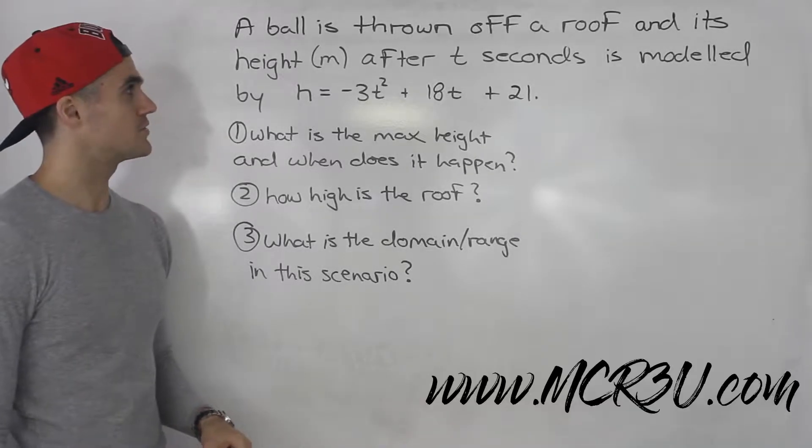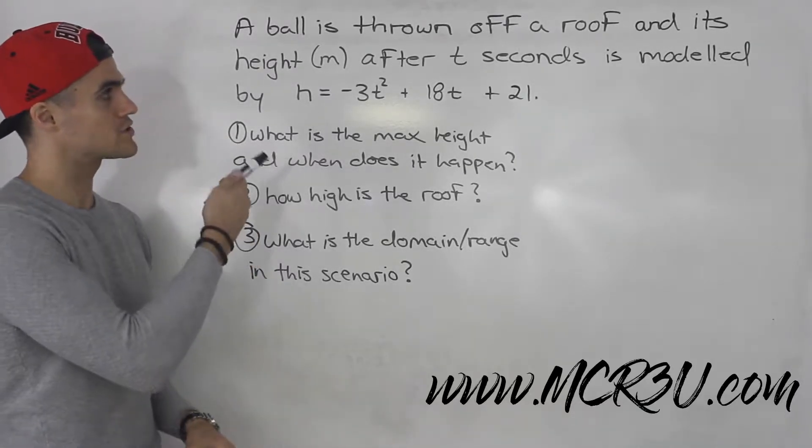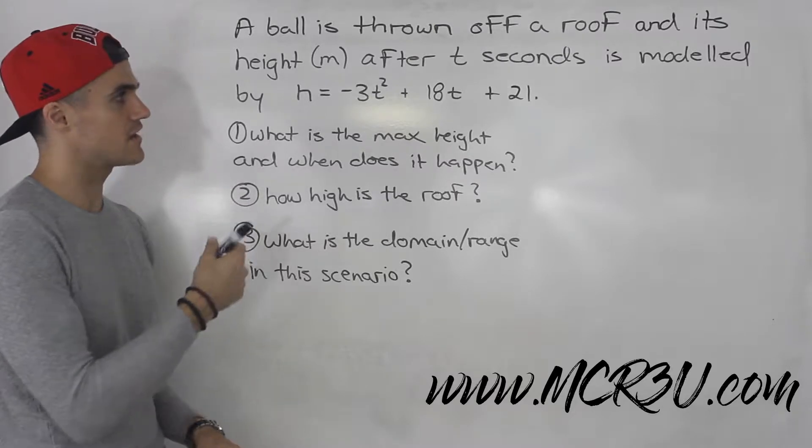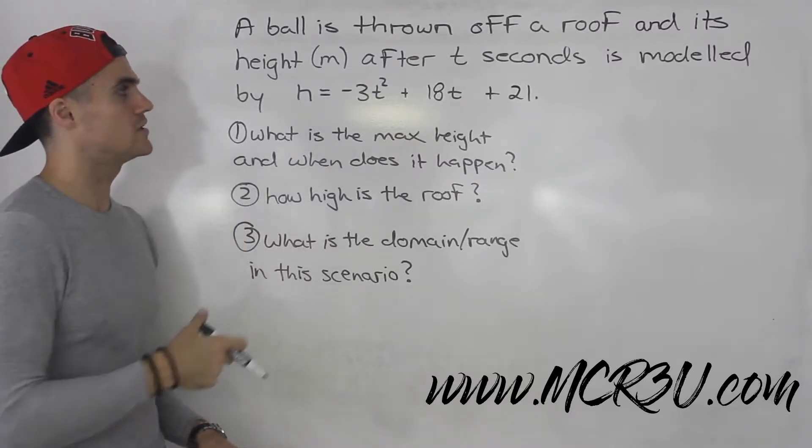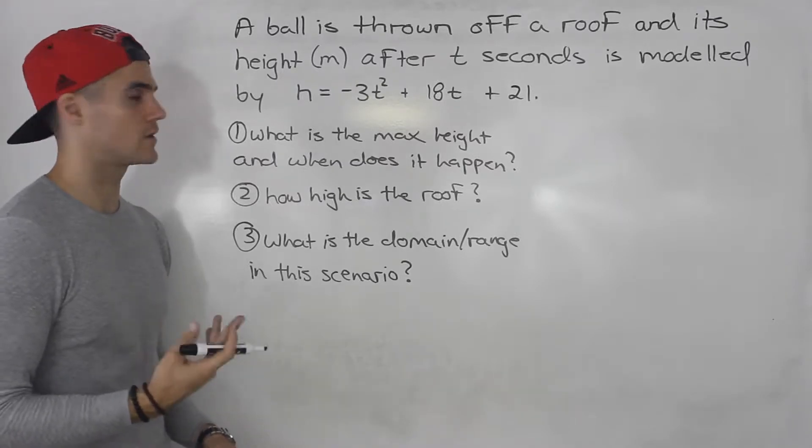What's up guys, Patrick here. Moving on to another word problem. We're told the ball is thrown off a roof and its height in meters after t seconds is modeled by h equals negative 3t squared plus 18t plus 21.